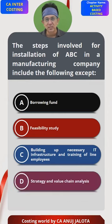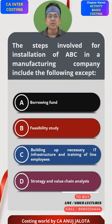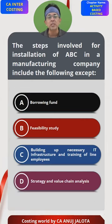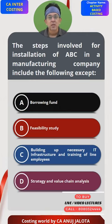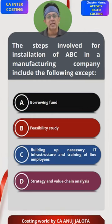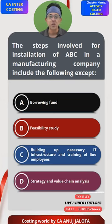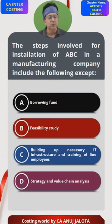Now, a few things about activity-based costing implementation. First, you need to think about whether you need to implement it or not — that is called a feasibility study. For example, if you are a single product company, activity-based costing might not help you much, because the entire overheads in any case, no matter what basis you follow, will be charged to that one single product only. So feasibility study is the first step.